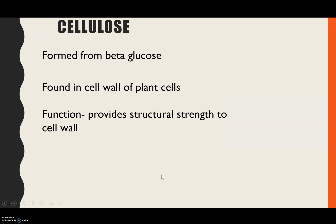Lastly, cellulose. This is the most different in structure and therefore function. The monomer is beta glucose — the other structural isomer. Its location is in the cell wall of plants, and it provides structural strength, preventing the cell from bursting when it becomes turgid with water.